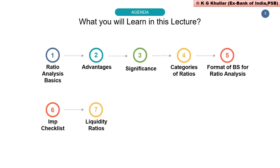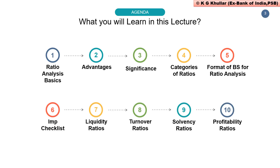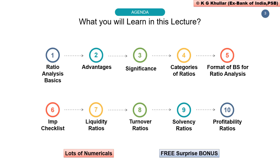Finally, we will start with the types of ratios — liquidity ratios, turnover ratios, solvency ratios, and profitability ratios. Though my advice is that you should not miss any part of this lecture, if you are from a commerce background or have an MBA, you can directly start from liquidity ratios. This lecture is full of questions at every step. In exams, you will face similar questions as we solve during this lecture. Do watch this lecture till the end as there is a free surprise bonus for all of you.